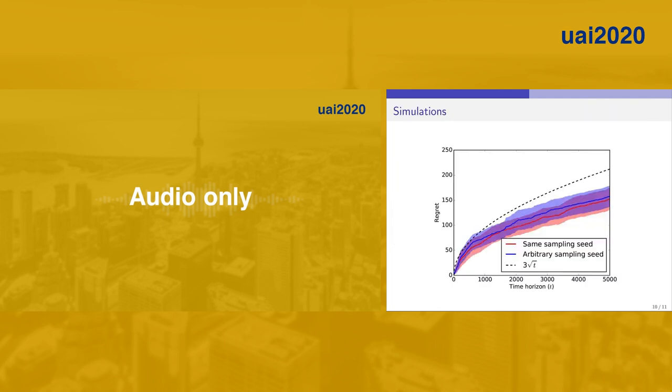I would like to show some numerical experiments on the performance of our proposed algorithm. We have our proposed algorithm under two cases: same sampling seed and arbitrary sampling seed. We can see that under both cases, the regret scales as √T, and this verifies our theoretical findings.